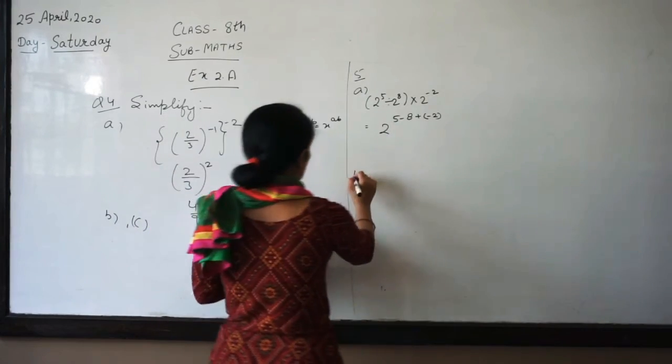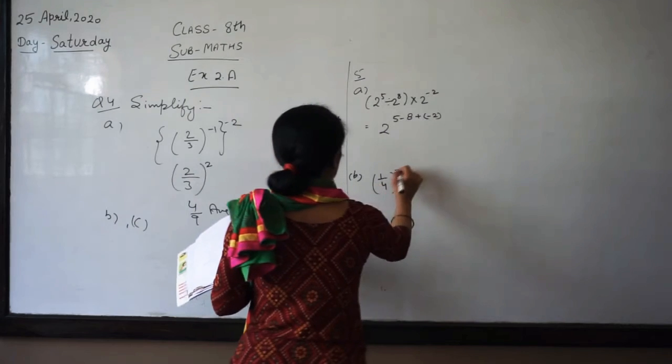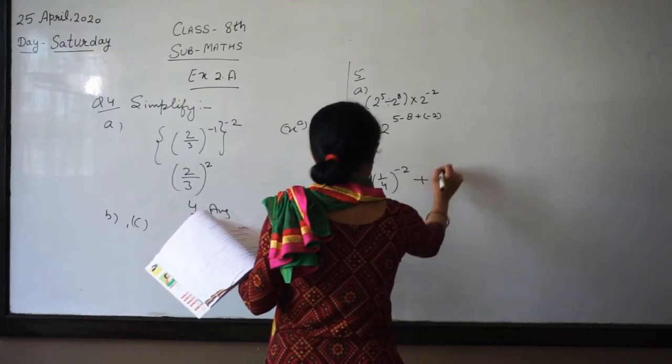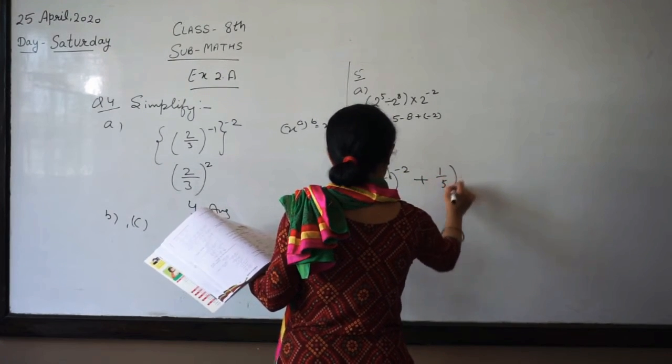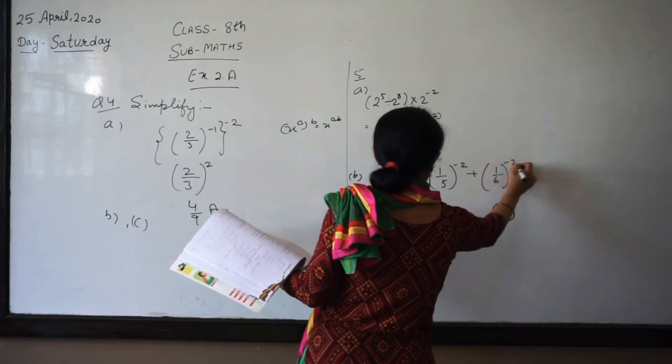Now question number B is 1 by 4 to the minus 2 plus 1 by 5 to the minus 2 plus 1 by 6 to the minus 2.